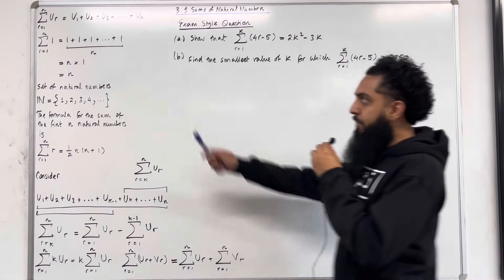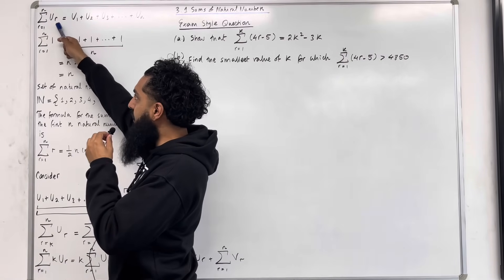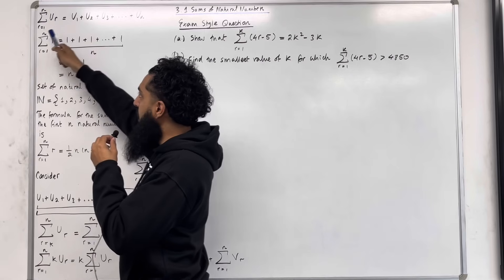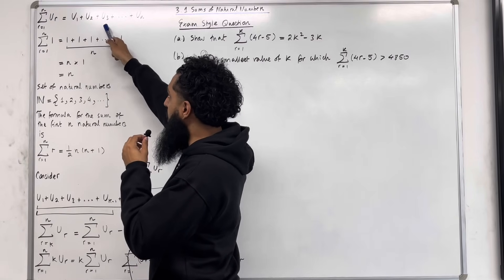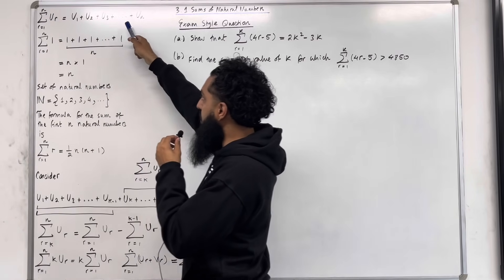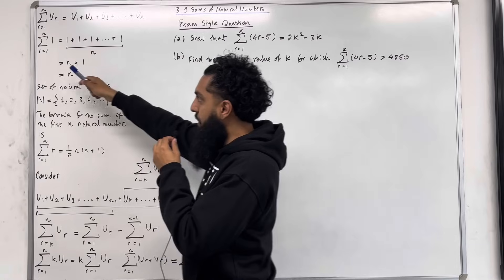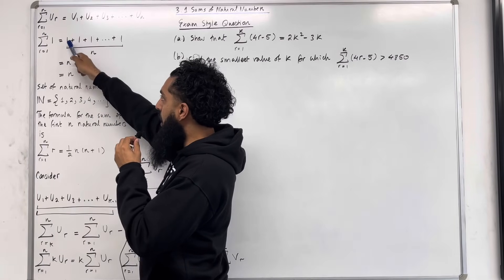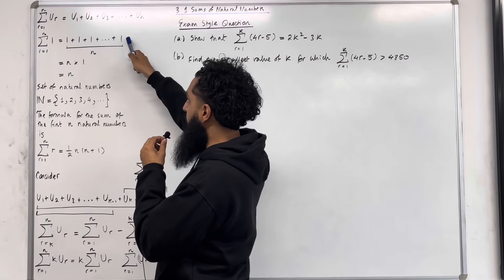This symbol over here represents the summation from R equal 1 to N of U_R — basically the summation from the first term up to the nth term. This is equal to U1 plus U2 plus U3 plus dot dot dot plus U_N. The summation from R equal 1 to N of 1 is given by 1 plus 1 plus 1 plus dot dot dot plus 1.